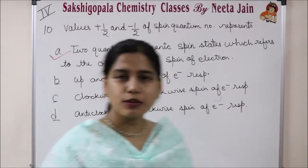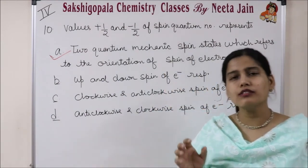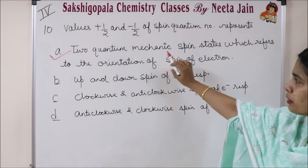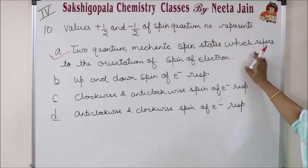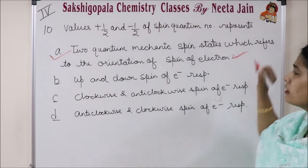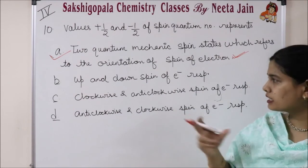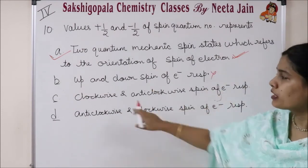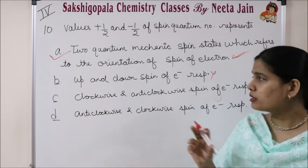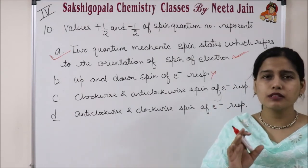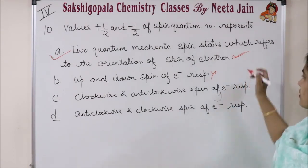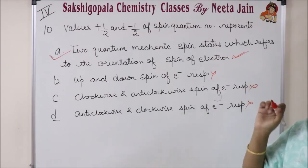The last question: values of plus half and minus half are the spin quantum number. They represent two quantum electromechanical spin states which refer to the orientation of spin of electrons. Note that 'clockwise and anticlockwise direction' is a common wrong choice — the correct answer is option A, representing the actual magnetic spin states and orientation of electrons.